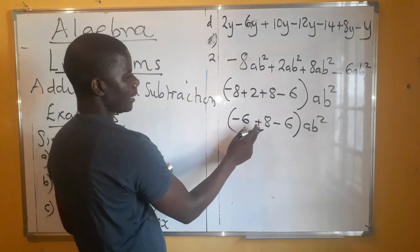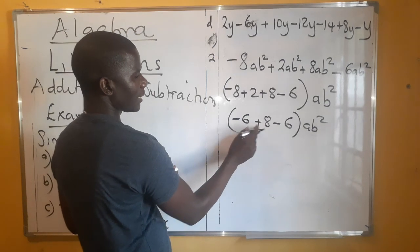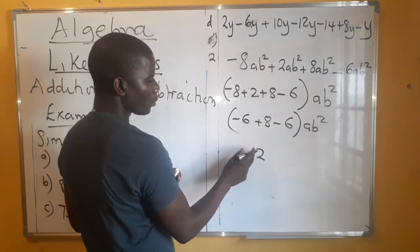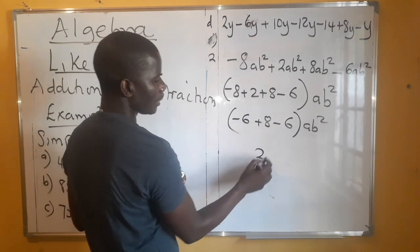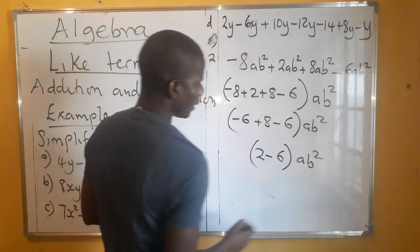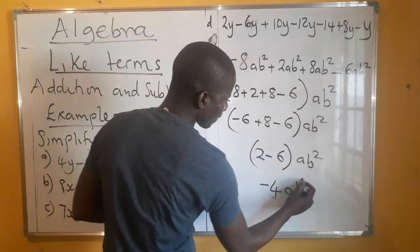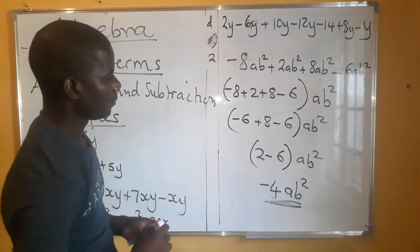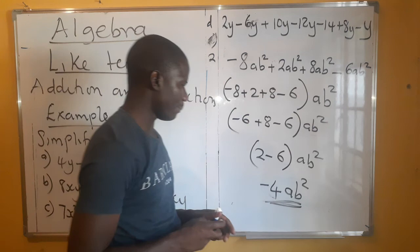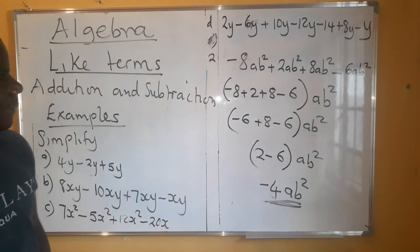We do the same thing here — different signs. You subtract 6, which is the smaller number, from 8, and you get 2. This 2 will have the sign of the bigger number, which is positive. Then what do we get when we subtract? We're getting minus 4. That is basically what we are supposed to get.